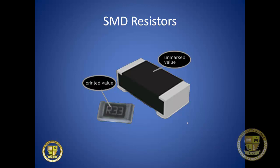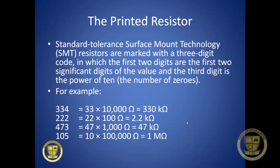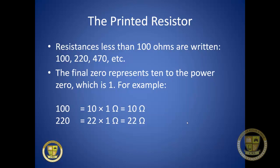SMD resistors come in two typical styles: unmarked and printed value. Standard tolerance SMT resistors are marked with a three-digit code where the first two digits are the significant figures and the third digit is the power of ten. For example, 334 means 33 × 10,000 = 330k ohms; 222 means 22 + two zeros = 2.2k ohms. To correctly identify these, you often need schematics, which can be very difficult to come across.